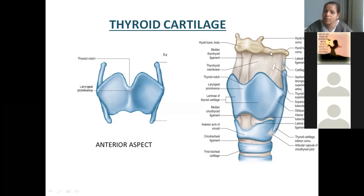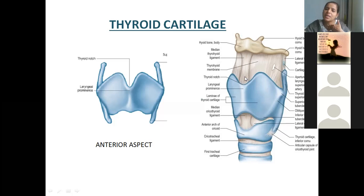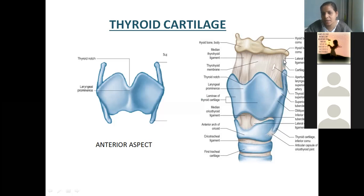Now we know this is the hyoid bone. So connecting the thyroid cartilage and hyoid bone, you are finding a membrane — you call it as the thyrohyoid membrane. The thyrohyoid membrane is thickened in the middle and also laterally. In the middle the thickening is called as the median thyrohyoid ligament. Laterally — lateral thyrohyoid ligament.